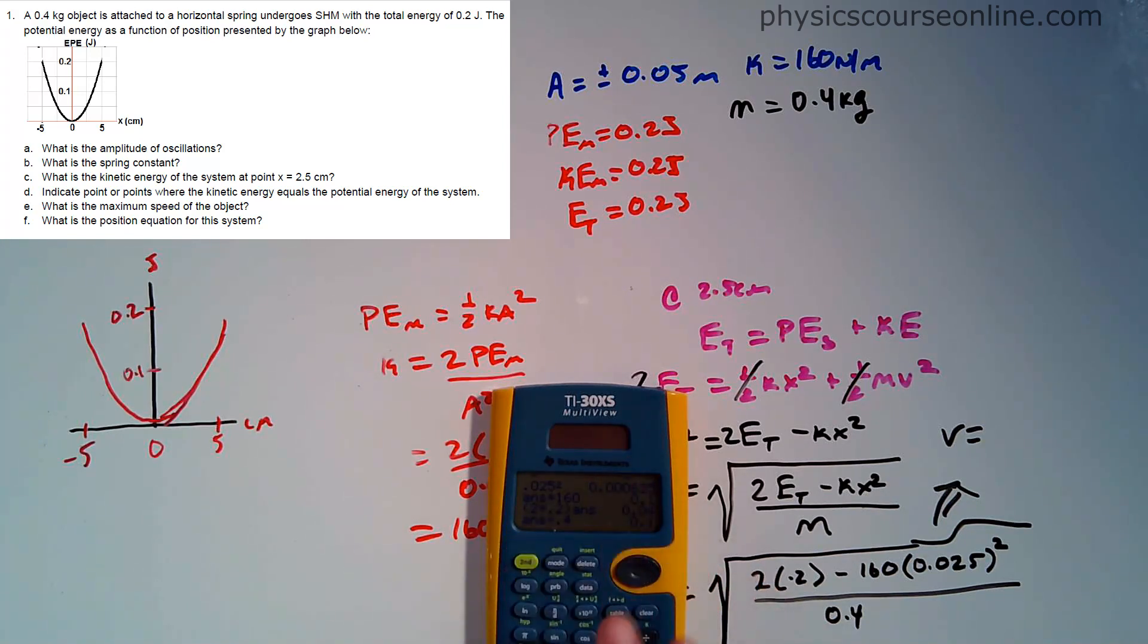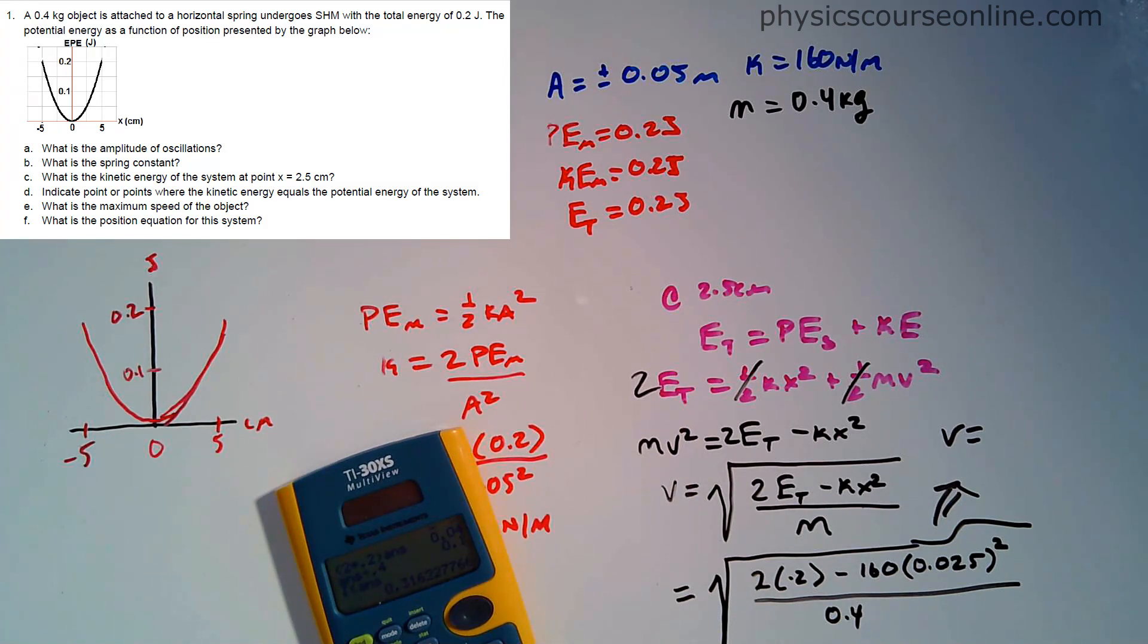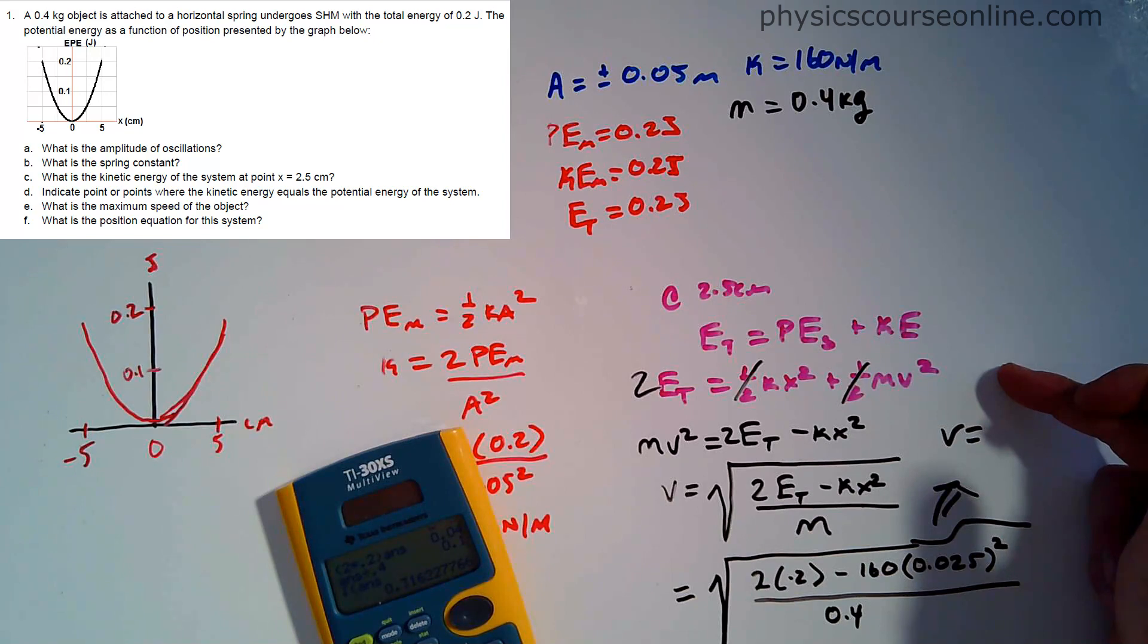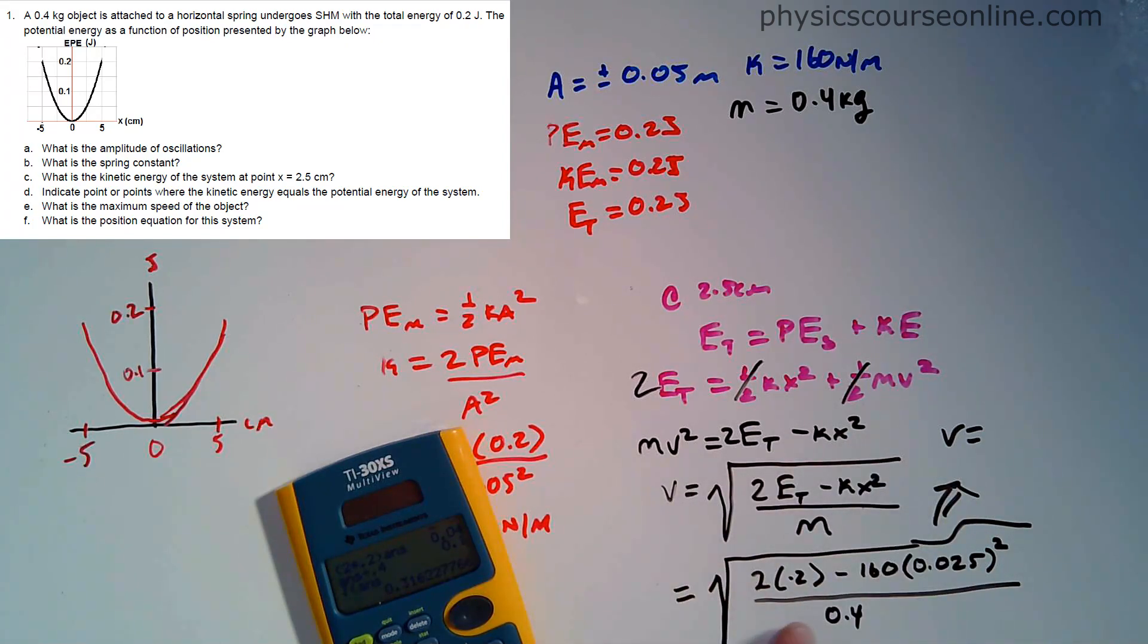Let's do this. 0.025 squared times 160. Now I'm going to do 2 times 0.2, and then I'm going to subtract that answer I just got. And I'm going to divide that by 0.4, and I'm going to radical all of that. We're going to get 0.31. Wait, something's not right. My answer key is not saying this. Let me just double check my math real quick and do my calculator work again.